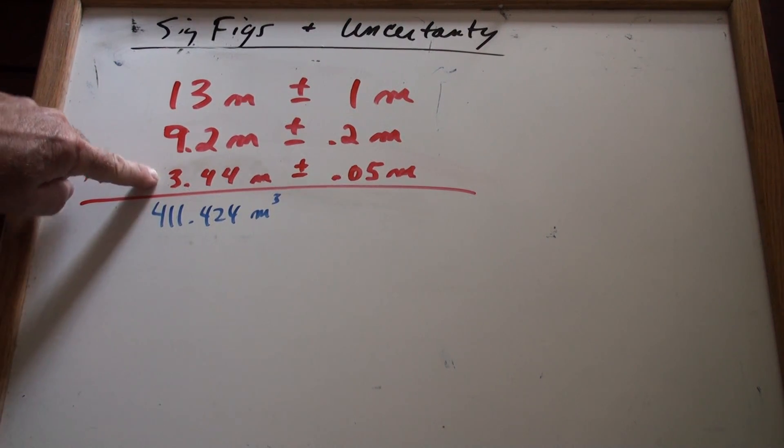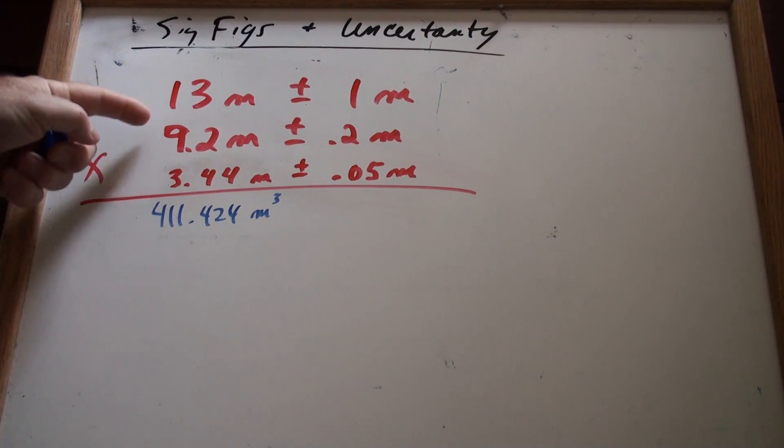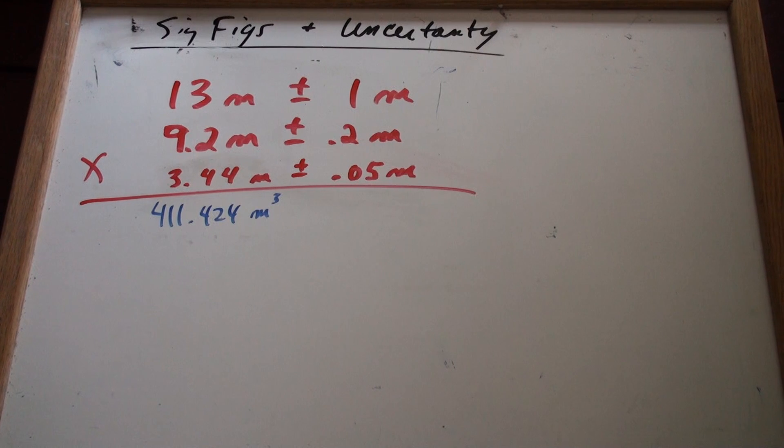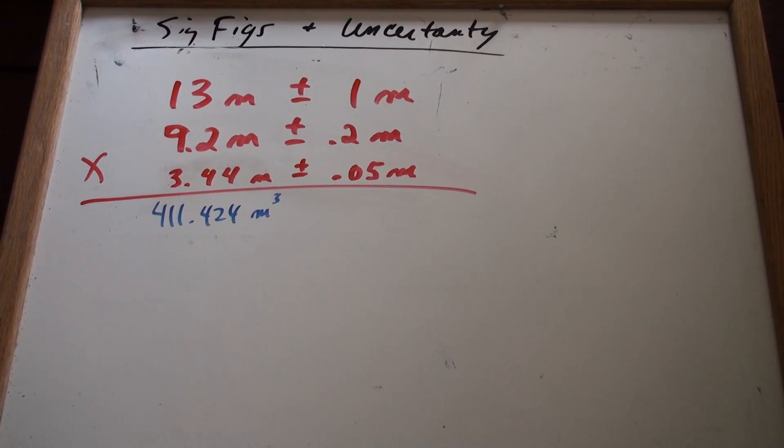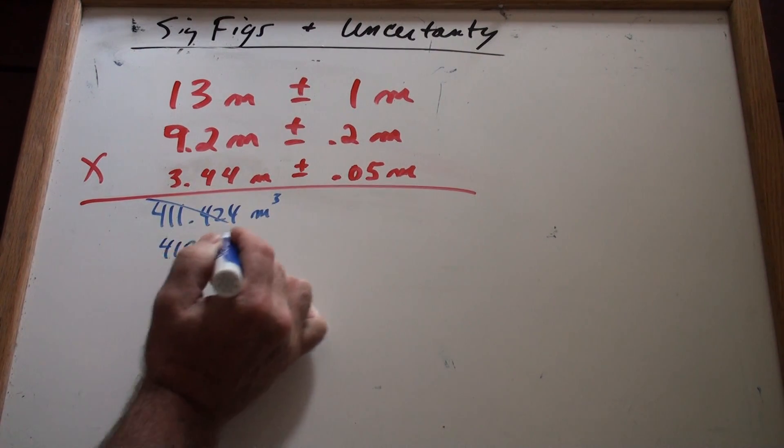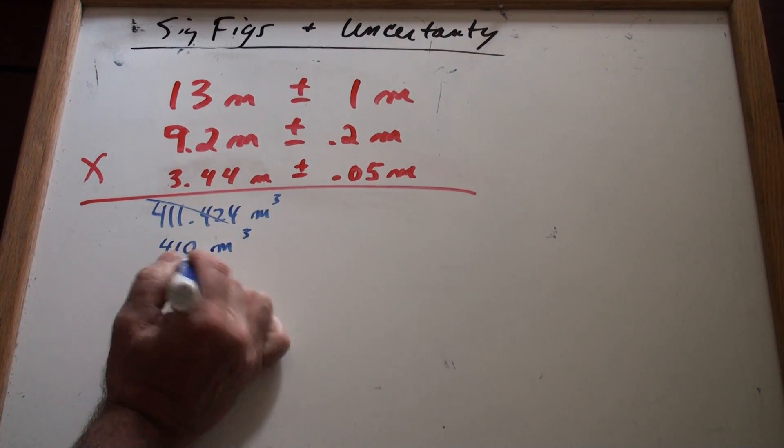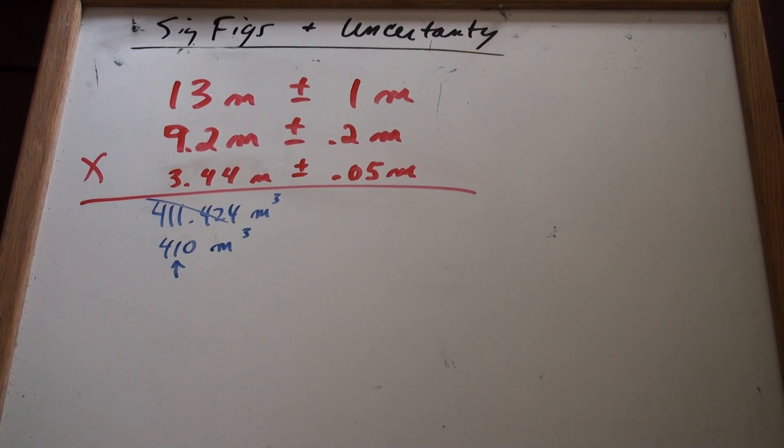Three sig figs, two sig figs, two sig figs. You always round your answer off to the same number of sig figs as your lousiest. So what's your lousiest? Two sig figs. So that means 411.424 has to be changed to 410 without a decimal point. That tells you that there's the guess right there in the tens place. All right.